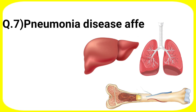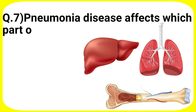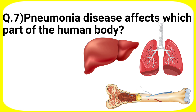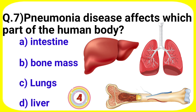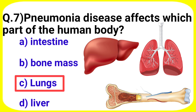Next question: Pneumonial disease affects which part of the human body? Your options are A. Intestine, B. Bone Mass, C. Lungs, D. Liver. Answer is option C. Lungs.